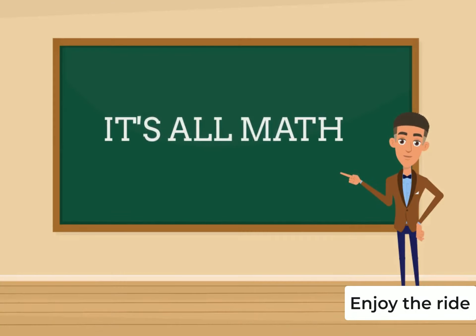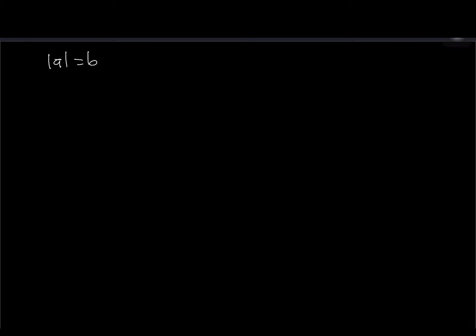It's all math. Before I start solving these questions, there are three statements to know. If I have absolute value of a equal to b, you have two statements: a equals b or a equals negative b. If I have absolute of a less than or equal to b, I'm going to have a less than or equal to b or a greater than or equal to negative b.